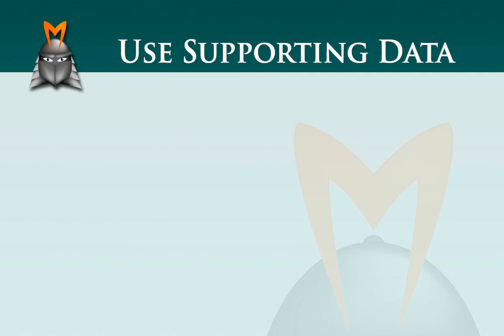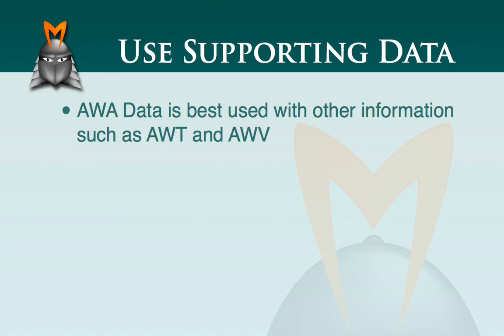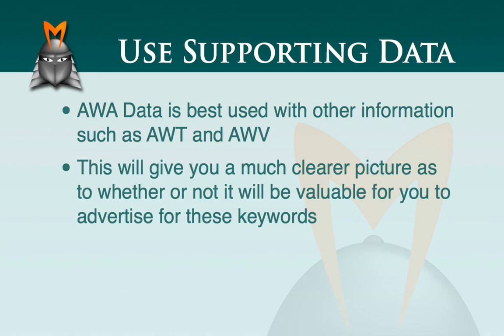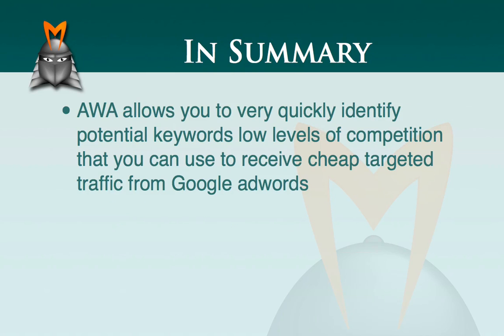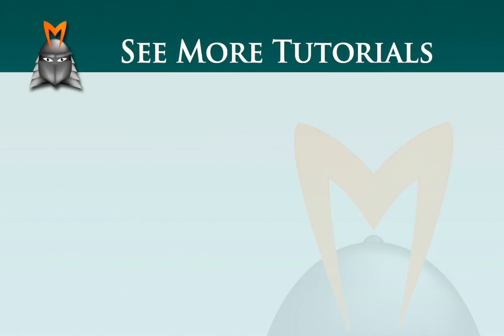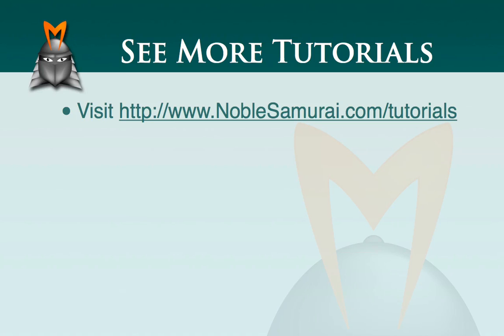It's important to note that the AWA information is best used in conjunction with other pieces of information, such as the AdWords traffic count and the AdWords value. Using it with these other factors gives you a much clearer picture as to whether it's going to be valuable to advertise for specific keywords. In summary, AWA allows you to quickly identify keywords with low levels of competition to receive cheap, targeted traffic from Google AdWords. I hope you've enjoyed this tutorial — there's more like this at www.noblesamurai.com/tutorials.